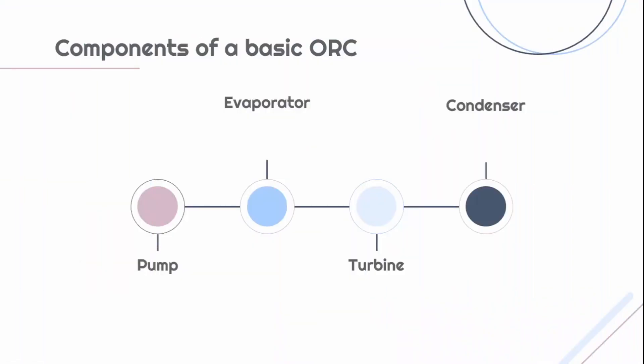Four components are typically used in a basic organic ranking cycle: a pump, an evaporator, a turbine, and a condenser.